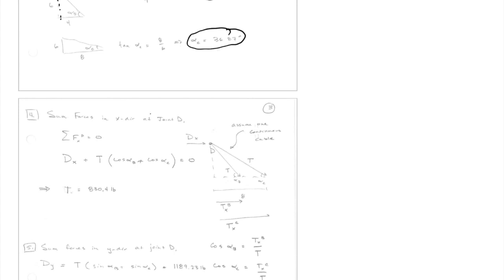With the cables cut away, we can figure out the resulting forces. We're going to sum the forces in the X direction at D. You can have multiple free body diagrams as long as every one ends up in equilibrium. We have D sub x, which we've already solved for, and then a force in the X direction from the tension in each cable. Because this is a frictionless pulley, the force in each cable is the same — T in each of them.